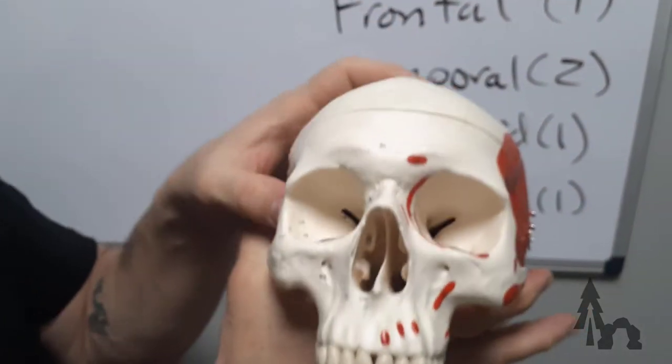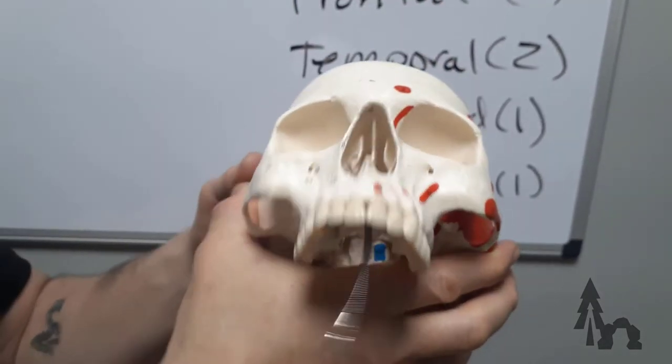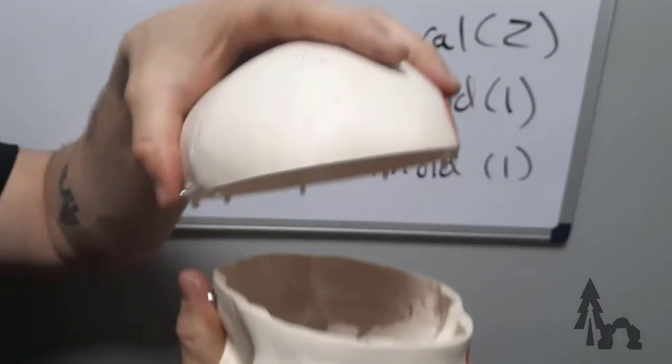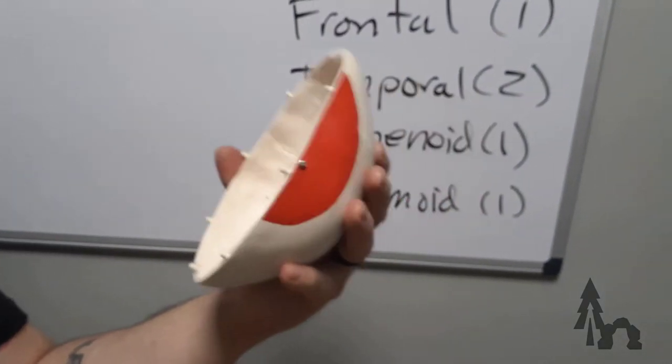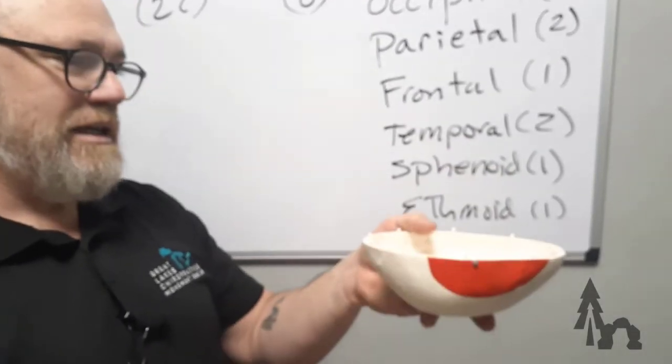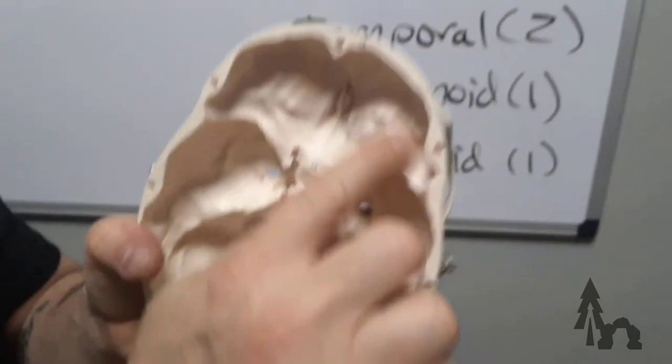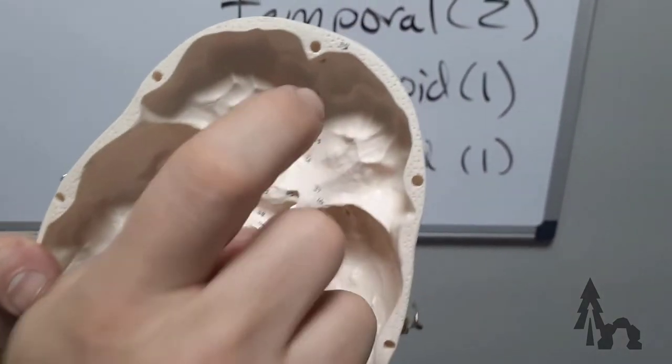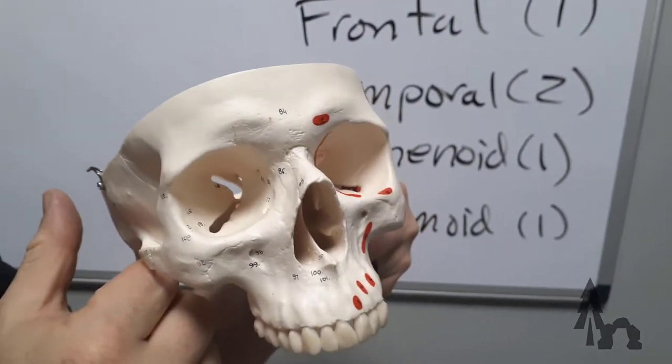The frontal bone is also going to form the roof of your eye socket or orbit. We're going to remove the dome or the calvaria, the little soup bowl, famed by Vikings and other heathens. They eat their cereal from the skulls of their enemies. And you can see how the frontal bone also makes the roof of the orbit, this eye socket here. That's the roof of the orbit.